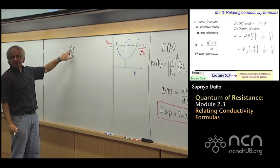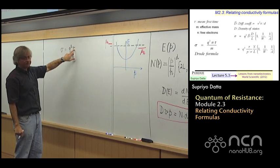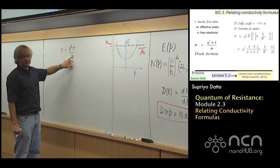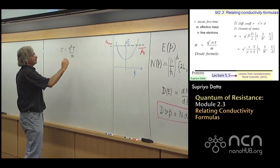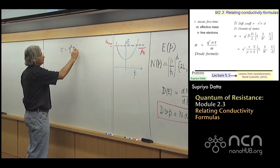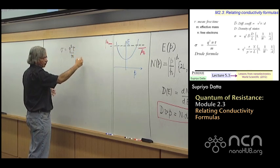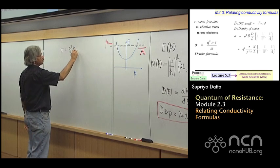So q is the charge on an electron. Tau is the mean free time. m is the mass of an electron. And this is multiplied by the number of electrons per unit volume, length, area, or volume, depending on how many dimensions we are doing this in.